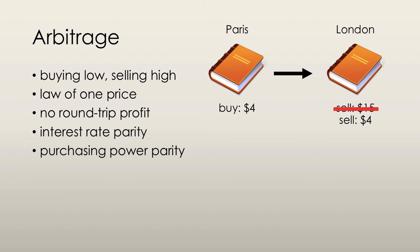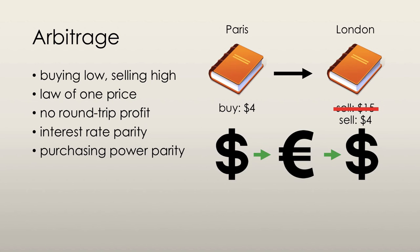There's also no round-trip profit. Round-trip profit essentially is using one currency to buy another, and then using that currency to rebuy the first currency. Arbitrage removes profit from all transactions of this type, because everyone would be doing it, and the exchange rates would be equalized.